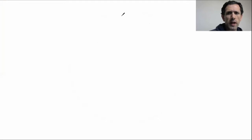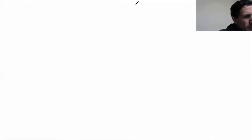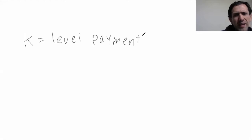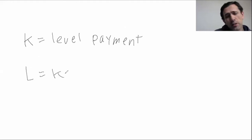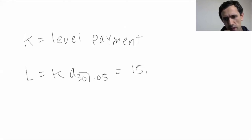So first, let's write out what the original loan amount actually is. This is a 30-year loan. We don't know what the level payments are — let's say K are the level payments. You pay K at the end of each year. The loan amount is just the present value of the loan, which is K times a-angle-30 at 5%.